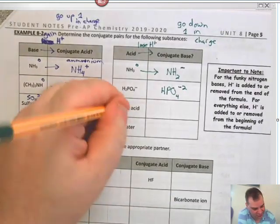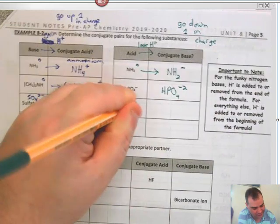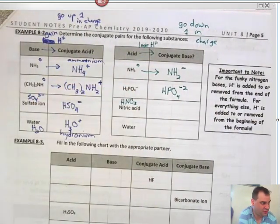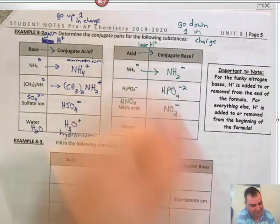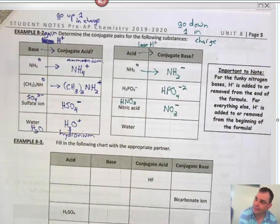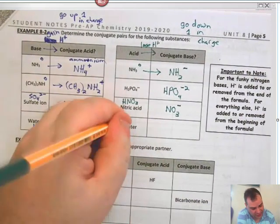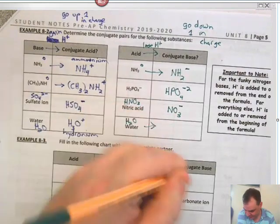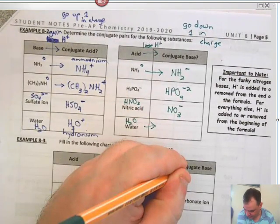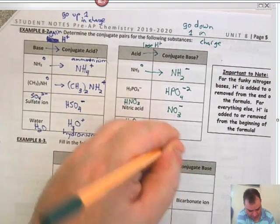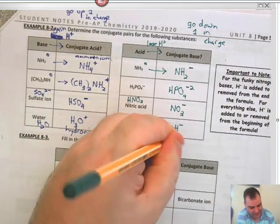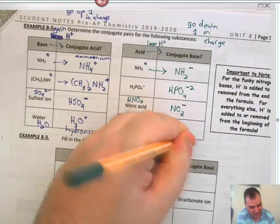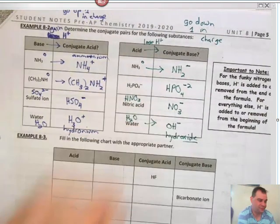Nitric acid, HNO₃, loses an H⁺ to become NO₃⁻ — that's nitrate — going down in charge to minus one. And H₂O loses an H⁺ to become OH⁻ — that's hydroxide. We write it as OH, not HO.